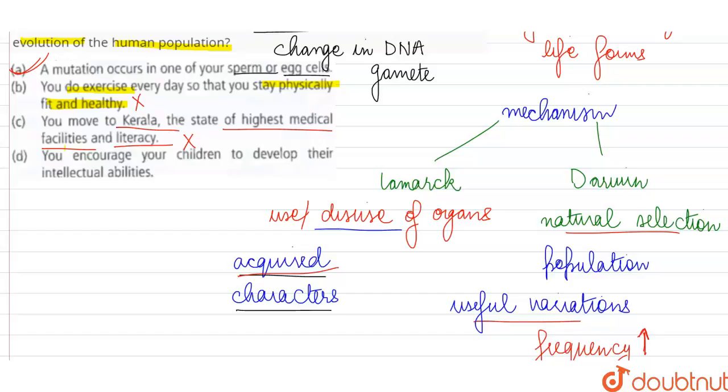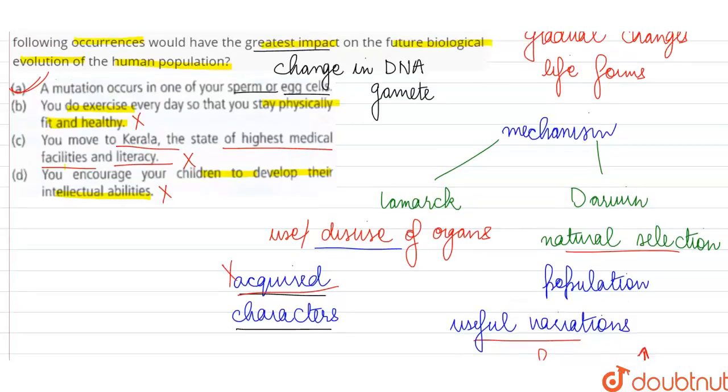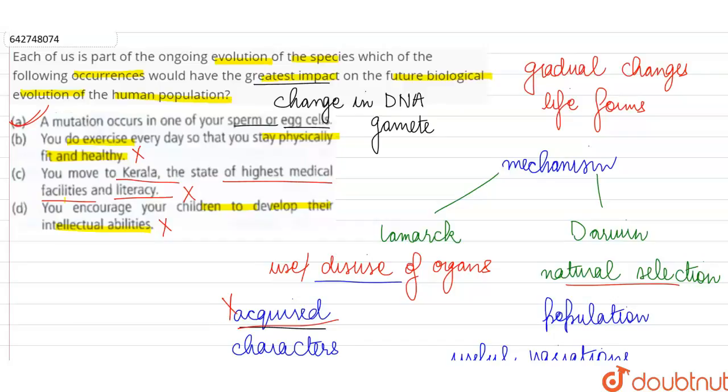And similarly, encouraging the children to develop intellectual abilities - however much knowledge we gain, however well read we become, the child is not going to be born with that knowledge. The child has to start all over again. So the acquired characters will not have an effect on evolution because we believe in Darwinism, we believe in natural selection, not the inheritance of acquired characters. So our correct answer is option A. The evolutionary process will only be affected if there is a change at genetic level, so a mutation occurring in the sperm or egg cell will be a factor that influences the evolution.